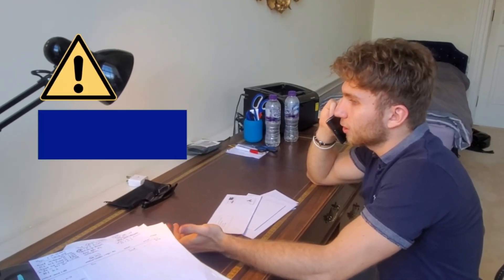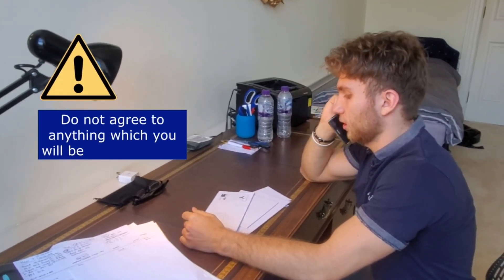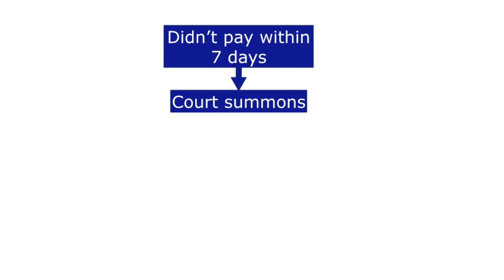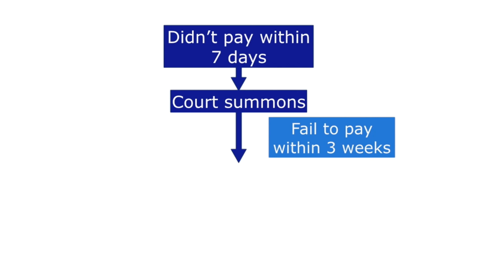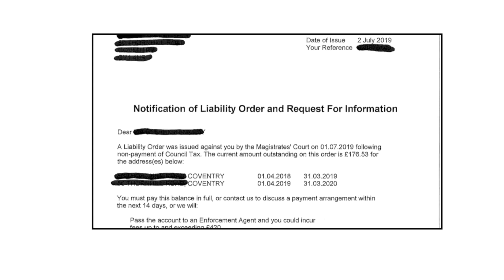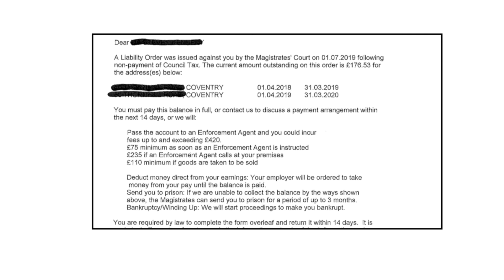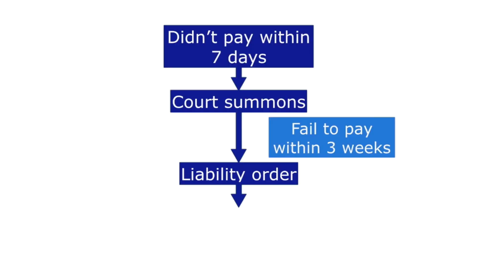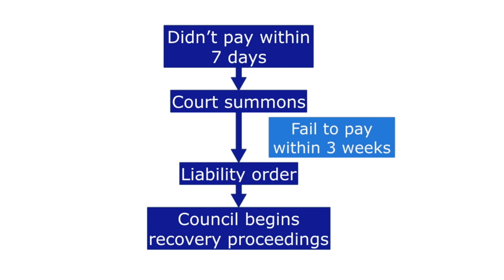It is important that you do not agree to anything which you will be unable to fulfil. The subsequent step is that if after three weeks you have failed to pay the balance, the council can issue a liability order to the Coventry Magistrates Court. A liability order means that the council taxpayer is liable to pay the amount of council tax and has yet to pay it. Therefore the council can begin recovering the debt which is owed, most commonly through enforcement officers, also known as bailiffs.